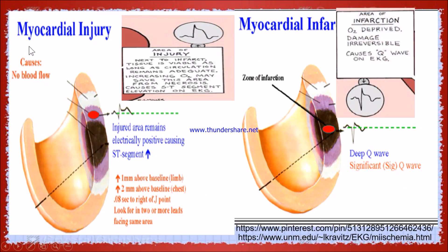Now let's see about myocardial injury. Whenever there is myocardial injury, there is decreased blood supply. The myocardial injured area is denoted with purple color in this diagram. There is still some collateral blood supply, and because of that collateral blood supply, the ST segment changes will be upsloping. The injured area will be electrically positive.